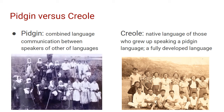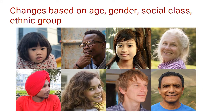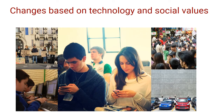Language changes can also happen based on age, gender, social class, and ethnic group. Research looks at how different grammatical forms are chosen not just by region but also by age and gender, finding that even within the same city or community there are different dialects and the language is constantly changing. Our language also changes because of technology and social values — we create new words for new things we care about and use. English especially is very open to this kind of change.